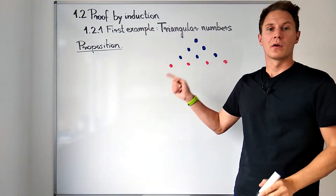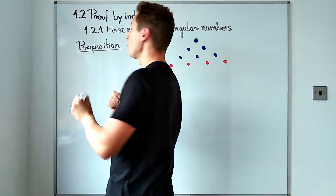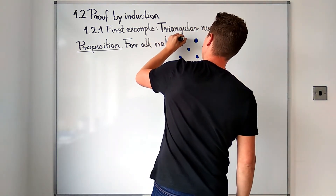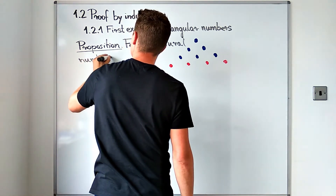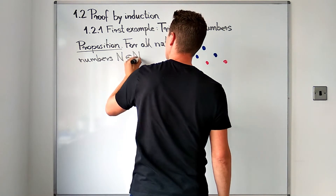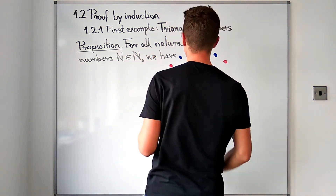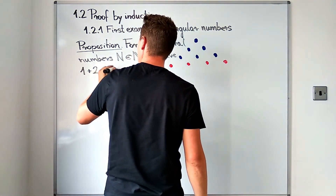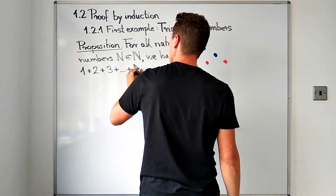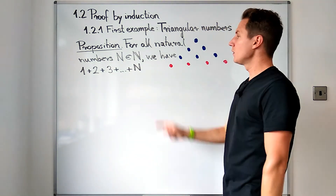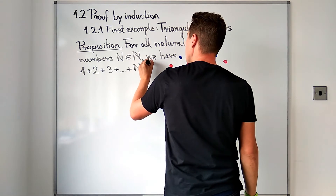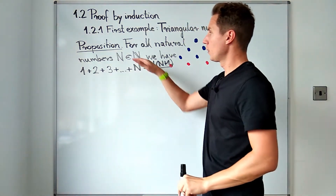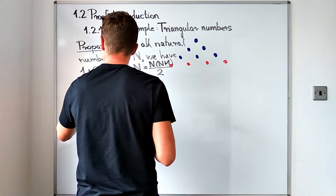These are triangular numbers and our first example is about them. We are going to prove a proposition for all natural numbers capital N: the sum one plus two plus three all the way to N equals N times (N plus one) divided by two. Remember how we built this triangle: we took one dot, added two, then three, and kept going until the nth row, so we calculate that sum, and the proposition says it equals N times (N plus one) over two.